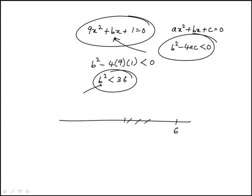any number between 0 and 6, and also between -6 and 0. So B is between -6 and 6,